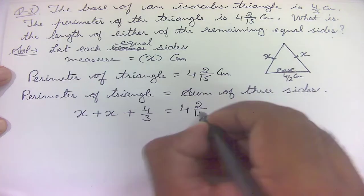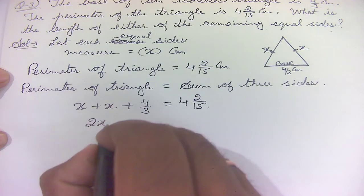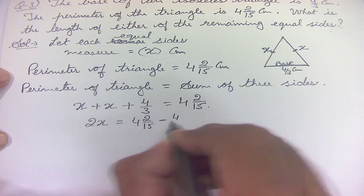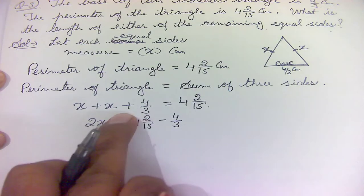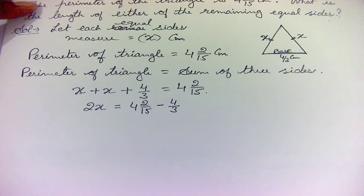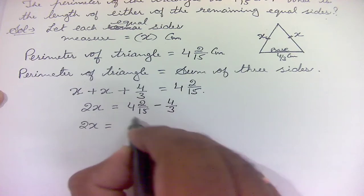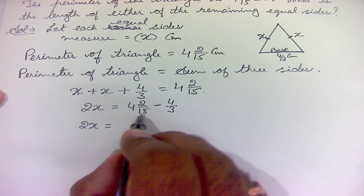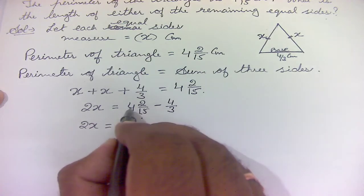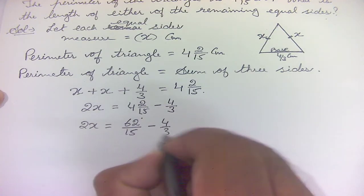Simplifying: x + x = 2x, so 2x = 4 and 2/15 minus 4/3. Taking 4/3 to the other side makes it minus 4/3. Converting the mixed fraction 4 and 2/15 to an improper fraction: 15 × 4 = 60, plus 2 = 62, giving 62/15. So 2x = 62/15 − 4/3.